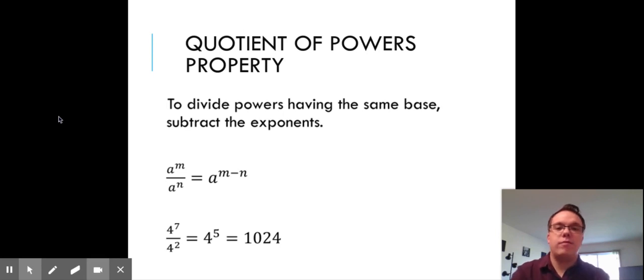All right, so the quotient of powers property states that if we have two powers with the same base and we're dividing them, we're going to subtract the exponents. So if we had two powers of the same base and we multiplied, we added. Today, we're dividing, so we're going to subtract.